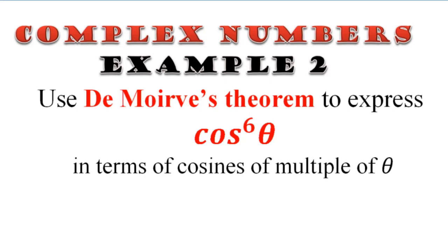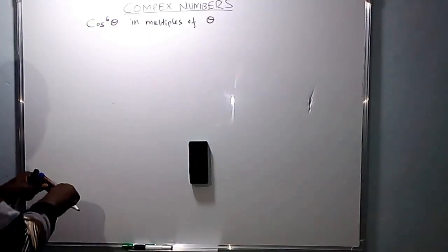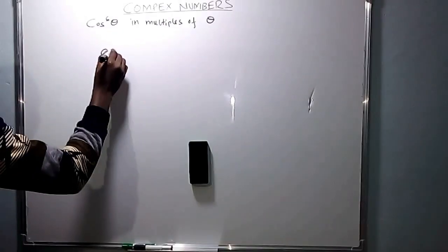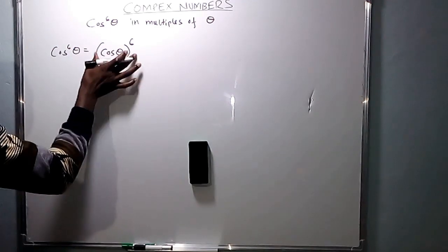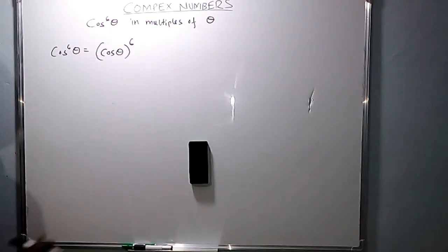Use De Moivre's Theorem to express cos raised to power 6 theta in terms of the cosines of multiples. When you take cos theta and raise it to power 6, you must start with cos theta. What is cos theta? That is what you start with.